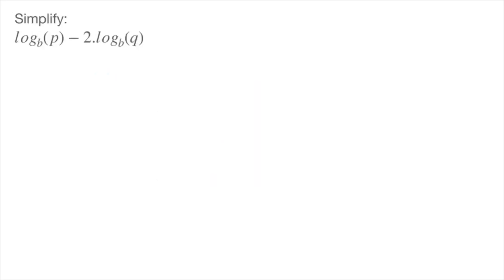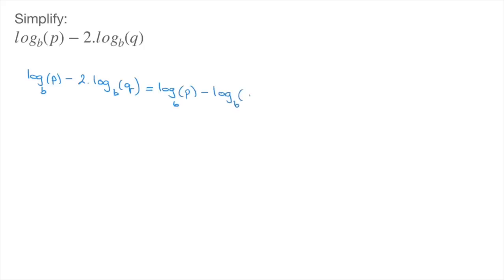Let's look at another example. In this case, we're asked to simplify log base b of p minus 2 times log base b of q. Although in this example we don't have any specific numbers — we have a generic base b and generic numbers p and q — we mustn't let that put us off. The rules we've seen will still apply here; we simply treat p and q as we would any other number. The first thing we'll do is take care of this 2 which is multiplying the second logarithm, and using the power rule we can state that this equals log base b of p minus log base b of q to the power of 2.